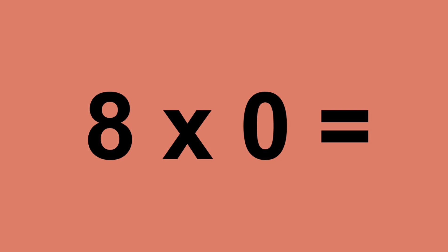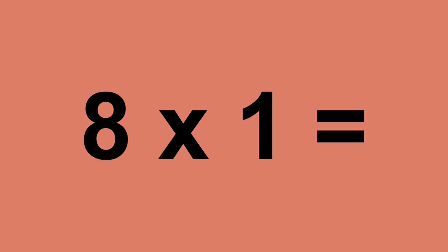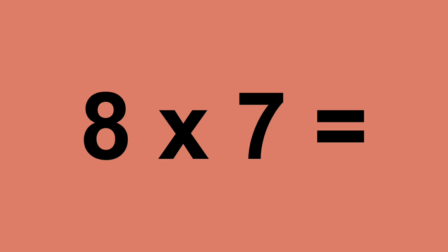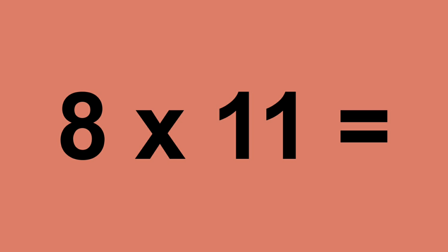Eight times zero equals zero. Eight times one equals eight. Eight times two equals sixteen. Eight times three equals twenty-four. Eight times four equals thirty-two. Eight times five equals forty. Eight times six equals forty-eight. Eight times seven equals fifty-six. Eight times eight equals sixty-four. Eight times nine equals seventy-two. Eight times ten equals eighty. Eight times eleven equals eighty-eight.